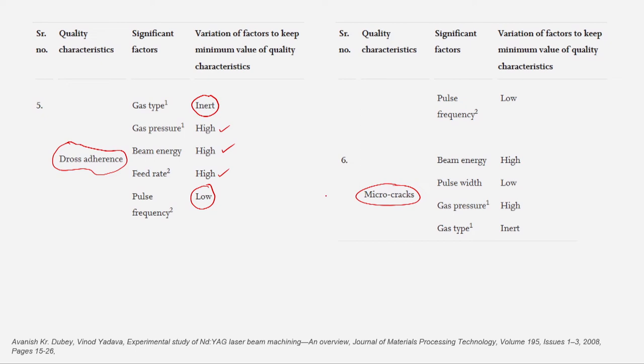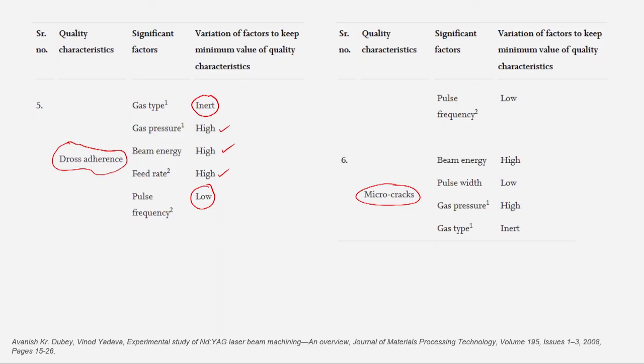Micro cracks are dangerous when laser-processed components are used in high-fatigue applications requiring high endurance strength. To minimize micro cracks, reduce pulse frequency, use high beam energy, keep pulse width low, and apply high inert gas pressure. The same parameter settings used to minimize the HAZ can also be applied to reduce the possibility of micro cracks during laser beam operations.